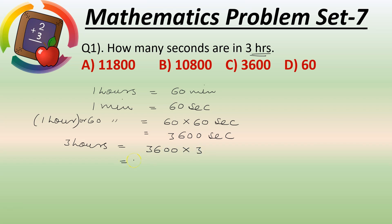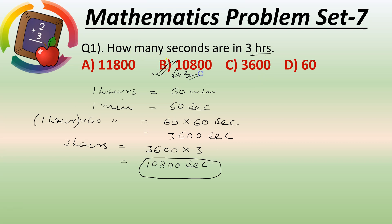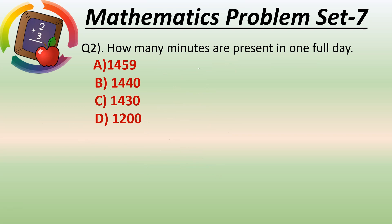Calculate it: 36 into 3 — 6 into 3 is 18, carry 1; 3 into 3 is 9 plus carry 1 is 10. So we get 108 with two zeros: 10,800 seconds. So in 3 hours equals 10,800 seconds. Option A is 11,800, Option B is 10,800, Option C is 3600, Option D is 60. Option B is the right answer.